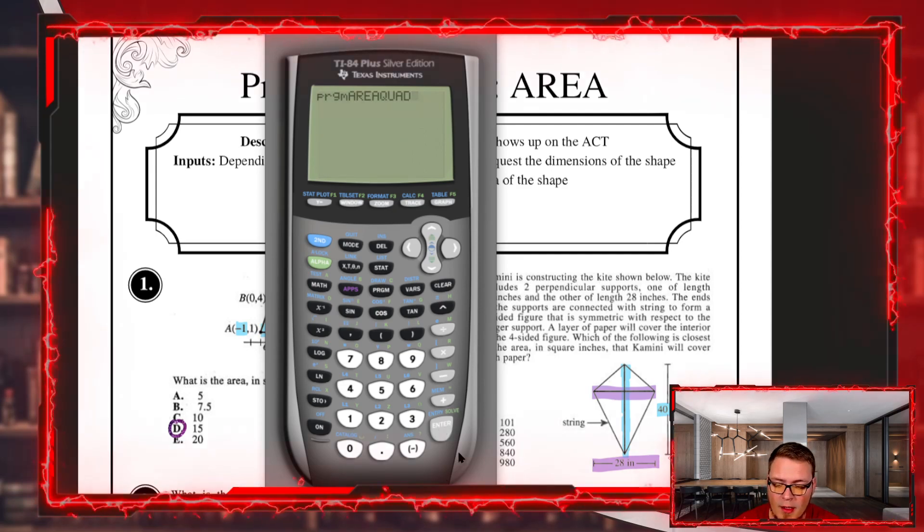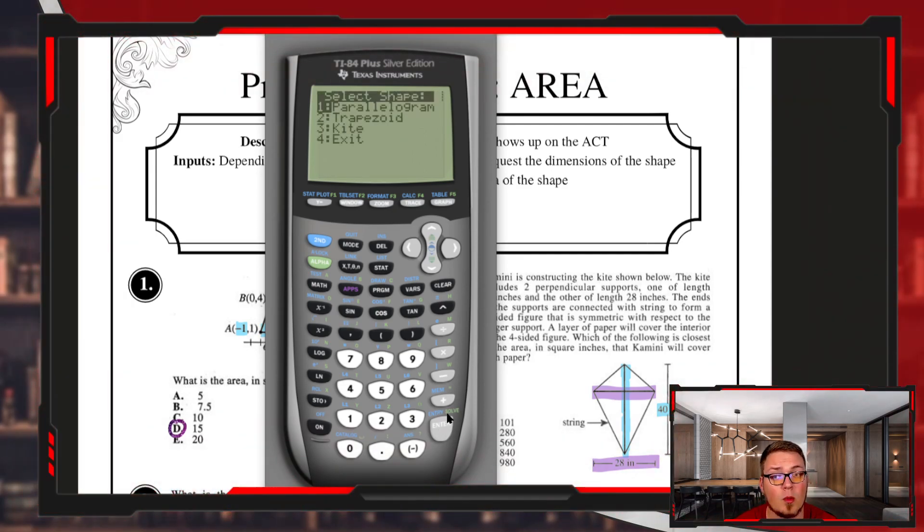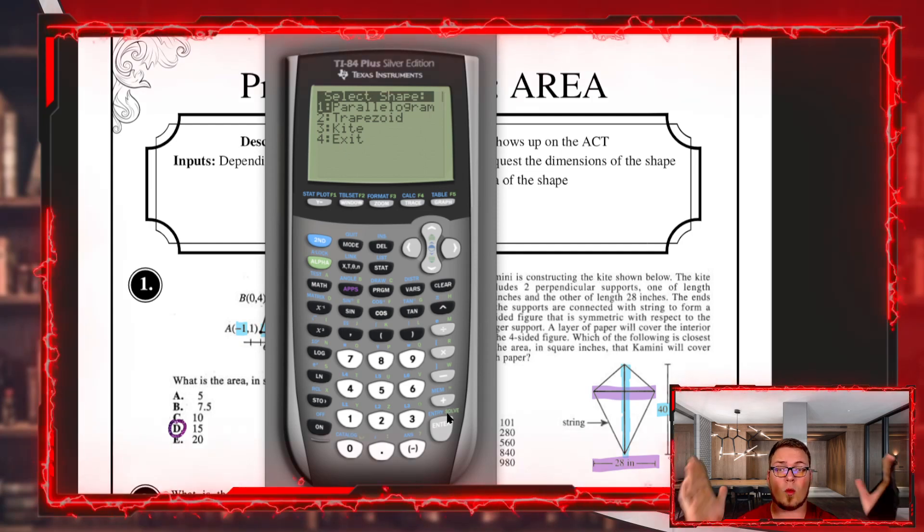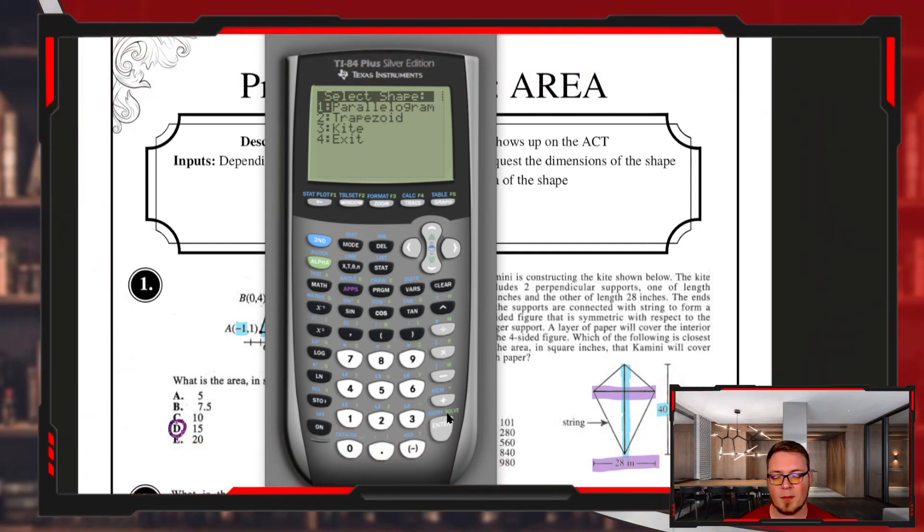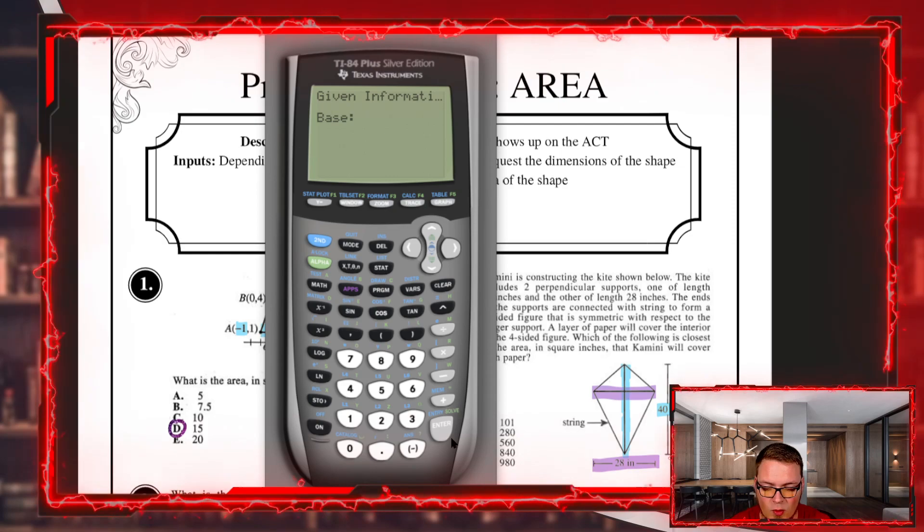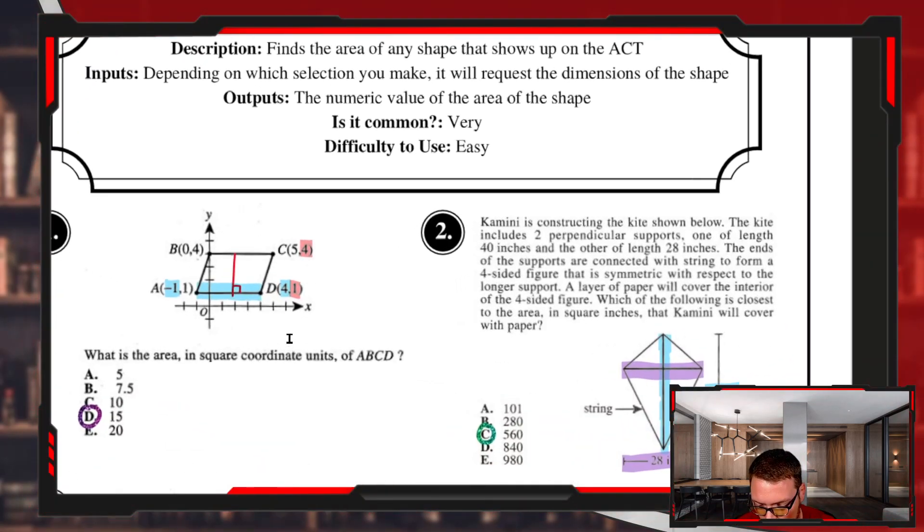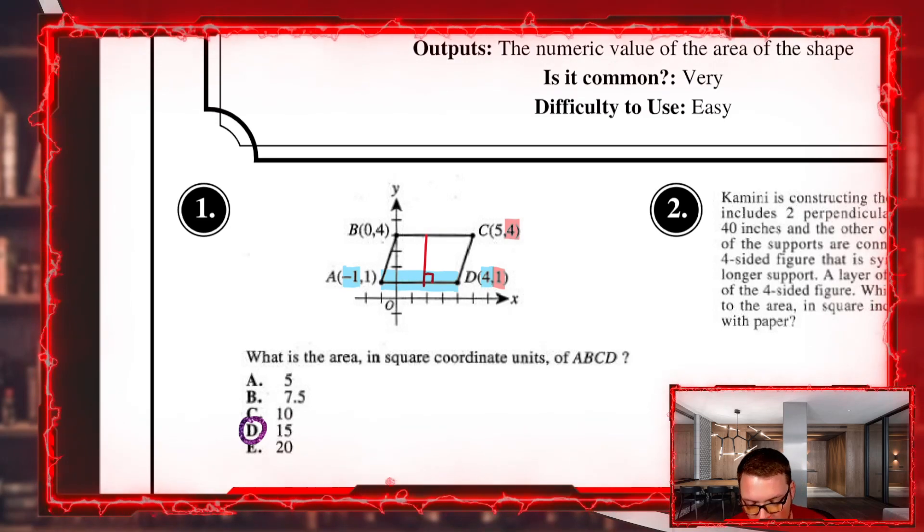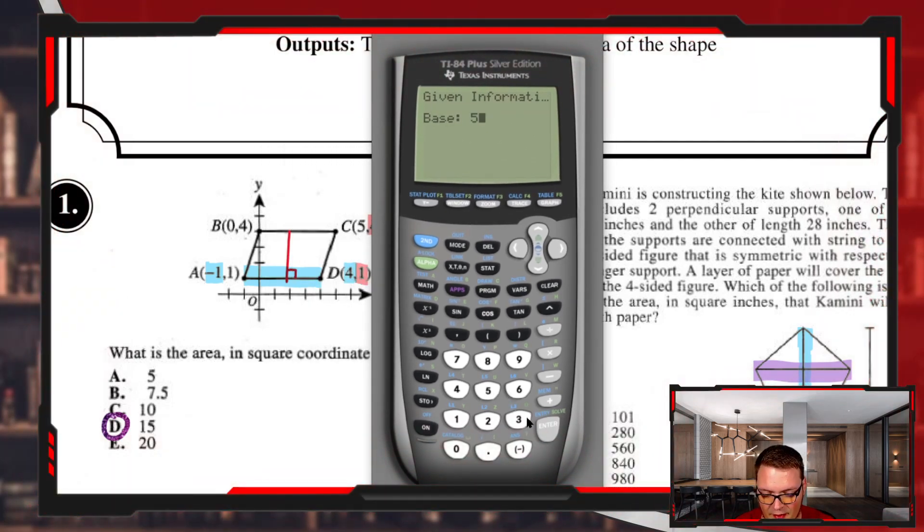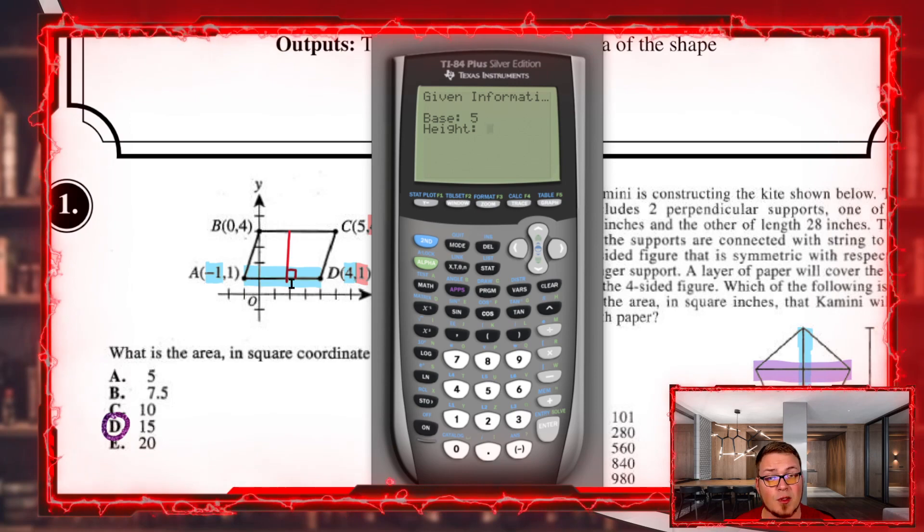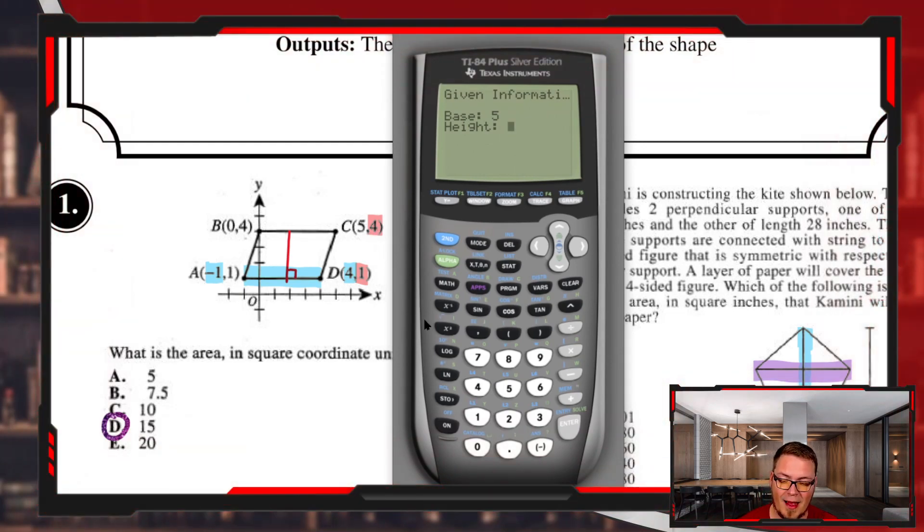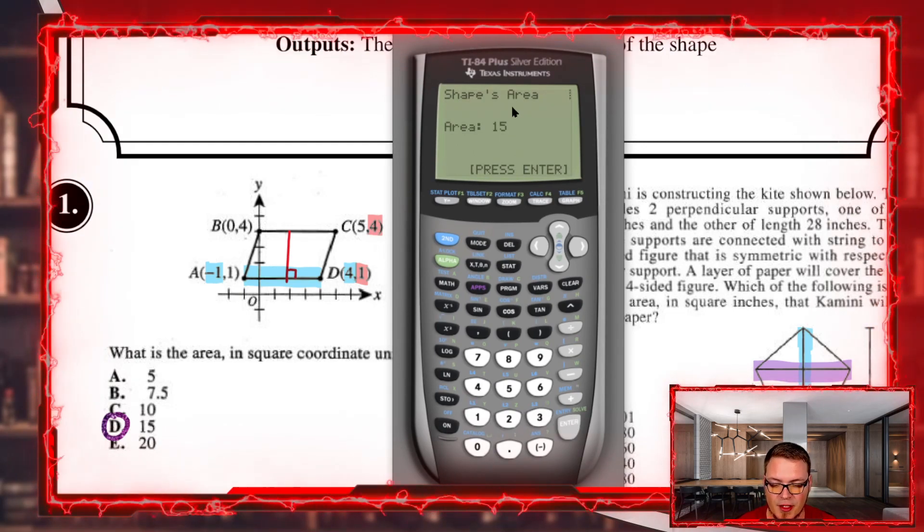Let me show you what each one does. Under the area quad option, hit enter twice to run the program. It asks what shape you have. A parallelogram could be a rectangle, square, or rhombus. You'll need the base length and height to find the area. Looking at question number one, the base from negative one to four is five units long, and the height from y equals one to four is three units. The shape's area is 15.